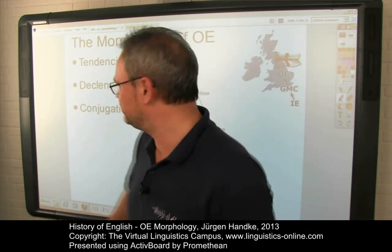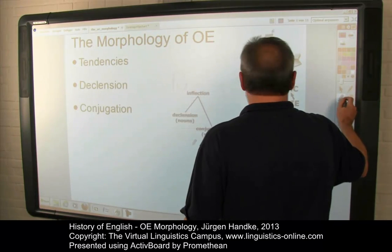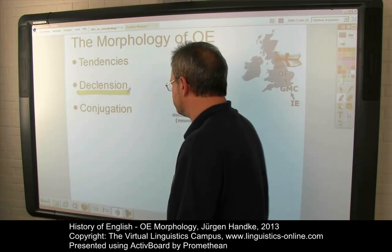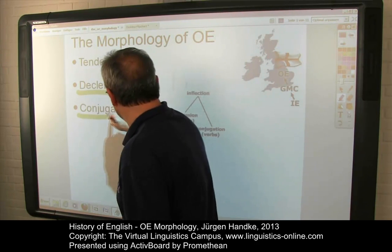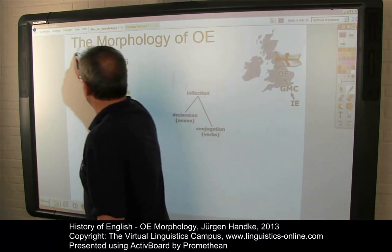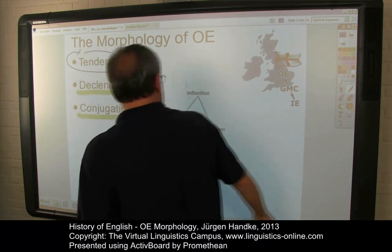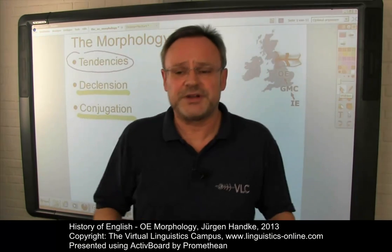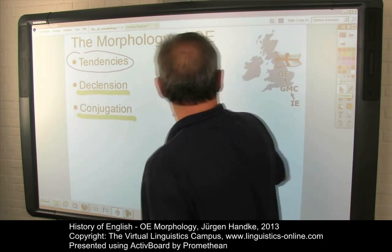Old English was more synthetic than present-day English. Its inflectional system was in many ways more elaborate. In this e-lecture, the central aspects of Old English inflection will be discussed. We will look at the declension of nouns, adjectives, pronouns and determiners. We will deal with the conjugation of verbs. But prior to that, we will discuss some general tendencies of Old English morphology and beyond that were already underway. So let us start here.